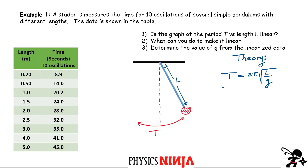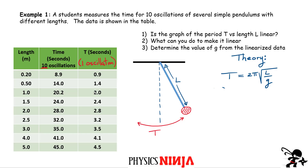First, we want to plot period versus length. We have the time for ten oscillations, so we need the time for one oscillation — we simply divide by ten. I do that here, keeping two significant figures. Now we have the period and the length, so I can make a graph of period versus length. The underlying theory is that the period equals two pi times the square root of the length divided by little g, where little g is the acceleration due to gravity.